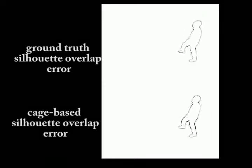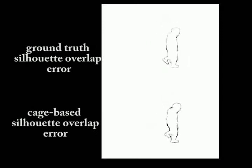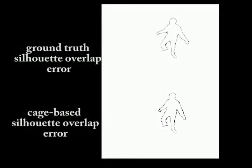As you can see on this video, our method, using cage-based deformation, allows the template to fit the silhouette better than a skeleton can do all alone.